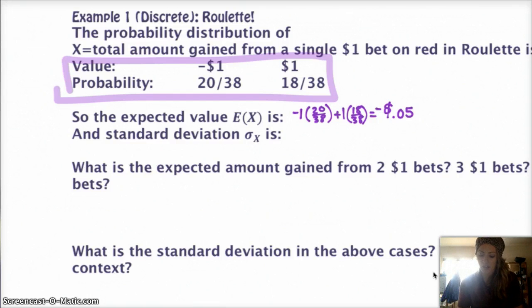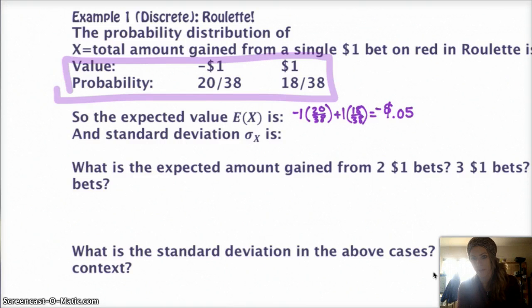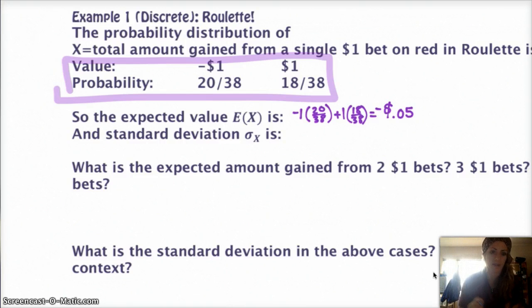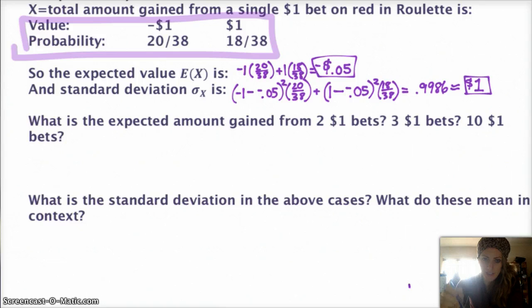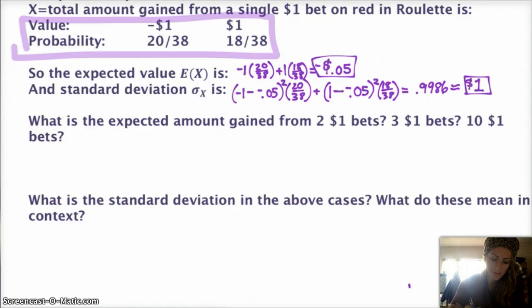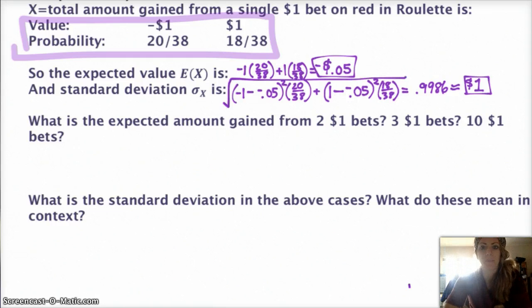The standard deviation is calculated the same way we've been calculating it before — take each value minus the mean, square it, multiply by the probability, and so on. The standard deviation is about $1. Make sure to include the square root.